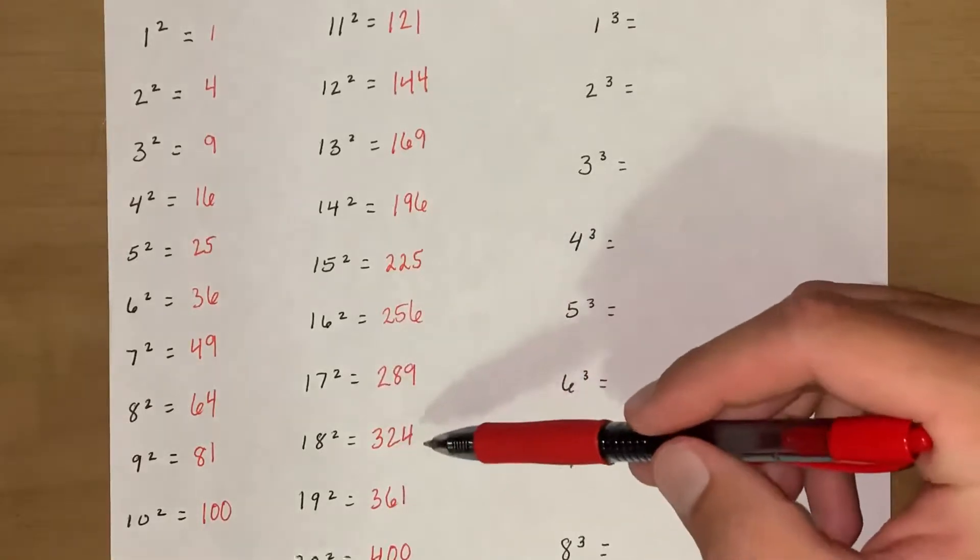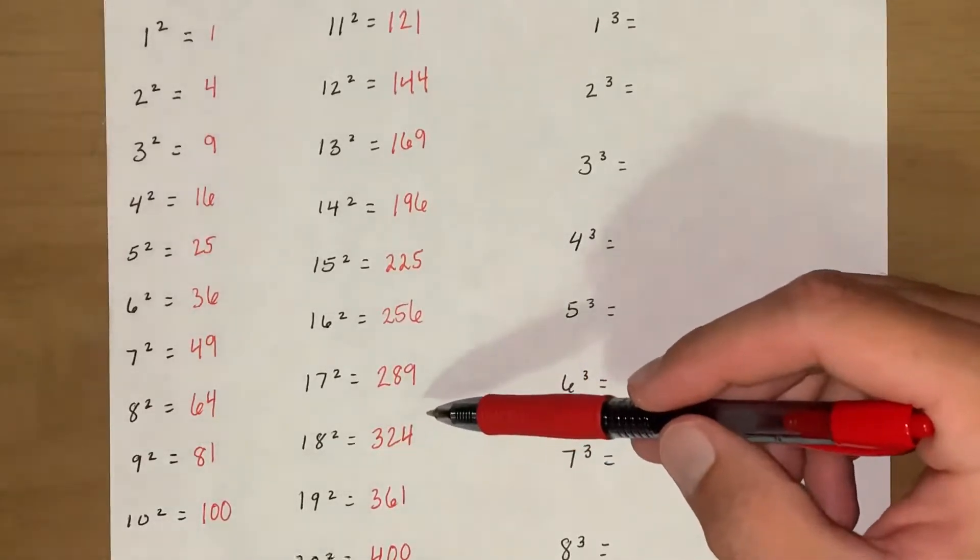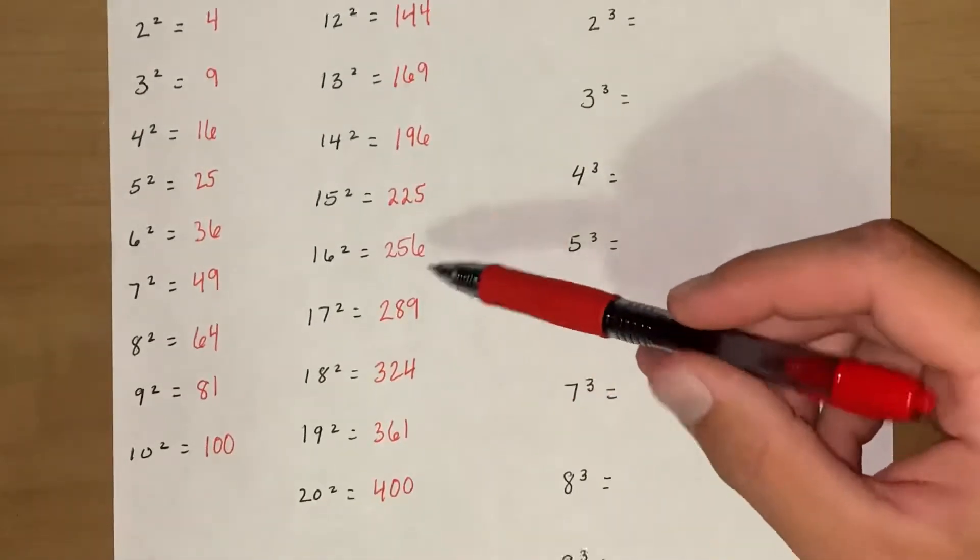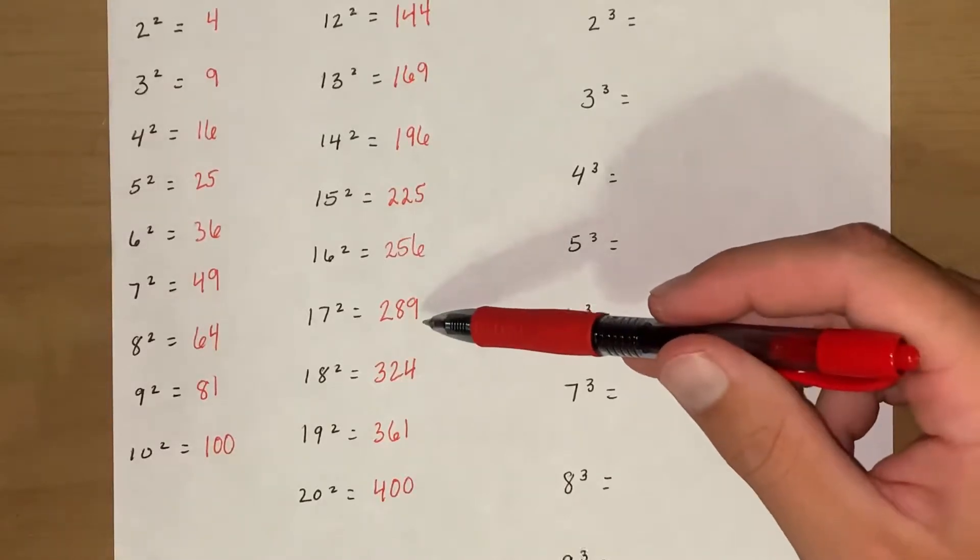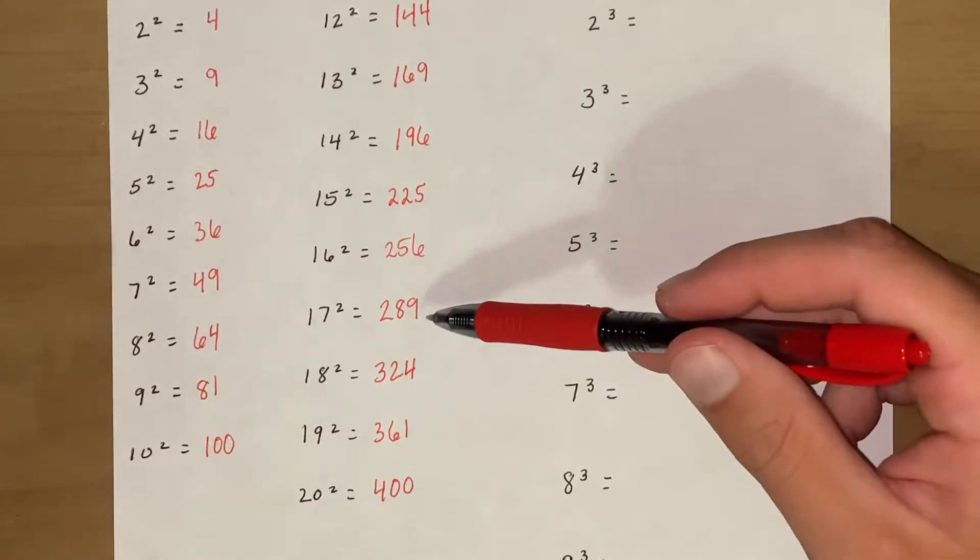All right, 16 squared has a 6 in it: 256. 17, 18, and 19, probably the toughest three. Don't really have a specific way to memorize those. Just have to look at them and memorize them.